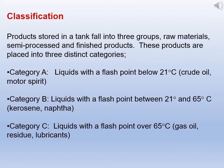Let us look at classification in another way, which explains products stored in a tank divided into three groups: raw materials, semi-processed, and finished product. These products are placed into three distinct categories. Category A: liquids with a flash point below 21°C — examples are crude oil and motor spirit. Category B: liquids with a flash point between 21°C and 65°C — kerosene and naphtha. Category C: liquids with a flash point over 65°C — gas oil, residue, and lubricants. This is another classification for defining or designing a storage tank.